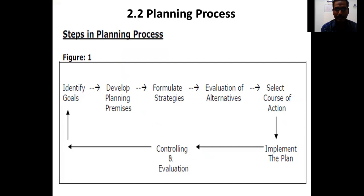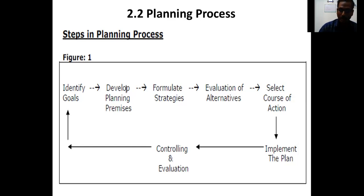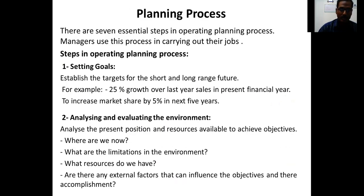The planning process consists of seven steps: first, identify goals; then developing planning premises; then formulate strategies; evaluation of alternatives and select a course of action; then implement the planning; and finally controlling and evaluation.